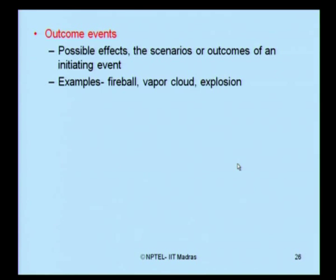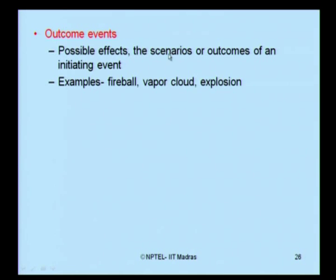Outcome events are the possible effects, scenarios, or outcomes of an initiating event. The initiating event is undesired, unexpected, and unwanted. However, if such events are present they will produce an outcome — a possible effect on the scenario. That possible outcome is what we call an outcome event. Examples include a fireball, a vapor cloud, or an explosion — all results and effects of the initiating event present in the scenario.